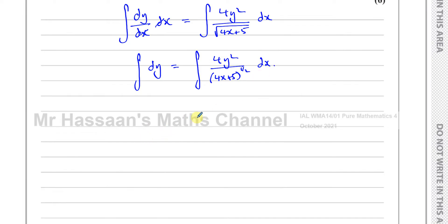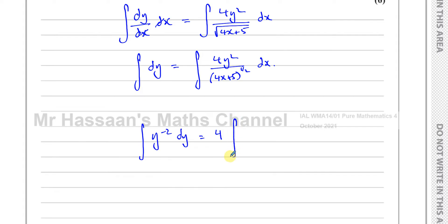So I'm going to divide both sides by y². The y² term ends up on the dy side. Dividing gives 1/y², which is the same as y to the power of negative 2. On the other side I'll take out the constant 4 and express the integrand in a form that's easy to integrate, writing it with the negative one-half power in the numerator.